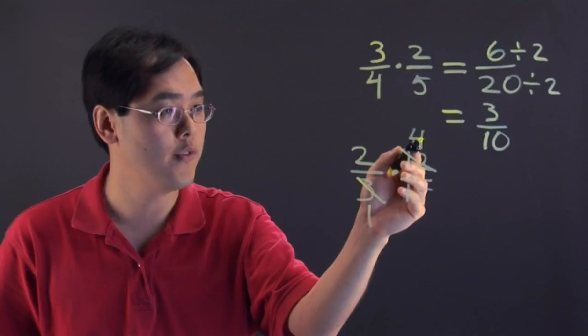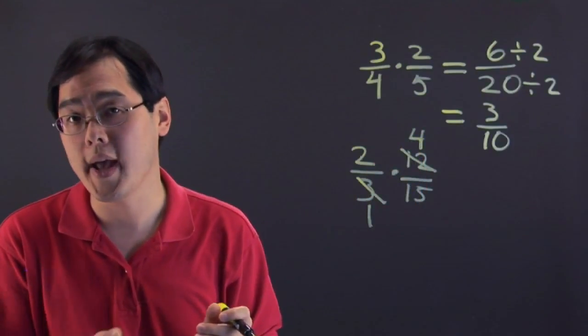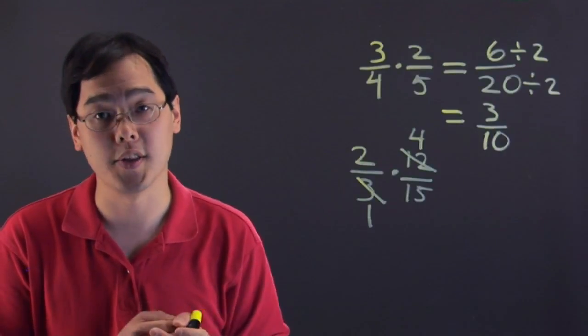And what's left over 4 does not reduce the 15. So now what this does is if you reduce along the way you don't have to reduce at the very end because you've already done the work.